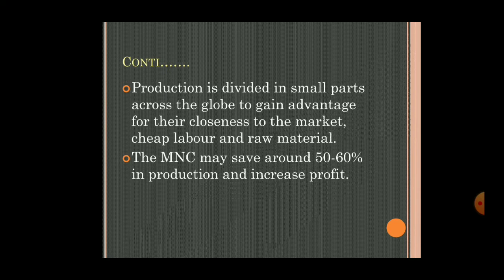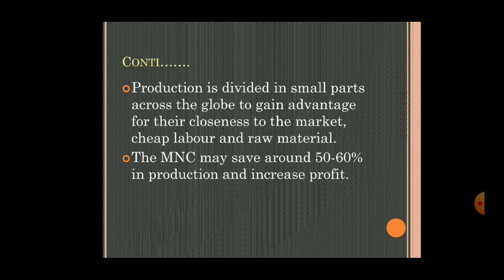Production is divided into small parts across the globe to gain advantages of closeness to the market, cheap labor, and raw materials. Why do these companies set up factories across the world? For example, a car maker closer to a rubber factory can easily get rubber materials including tires. Similarly, if accessories companies are closer to an automobile company, they can supply accessories directly. MNCs may save around 50 to 60 percent in production costs and increase profit.